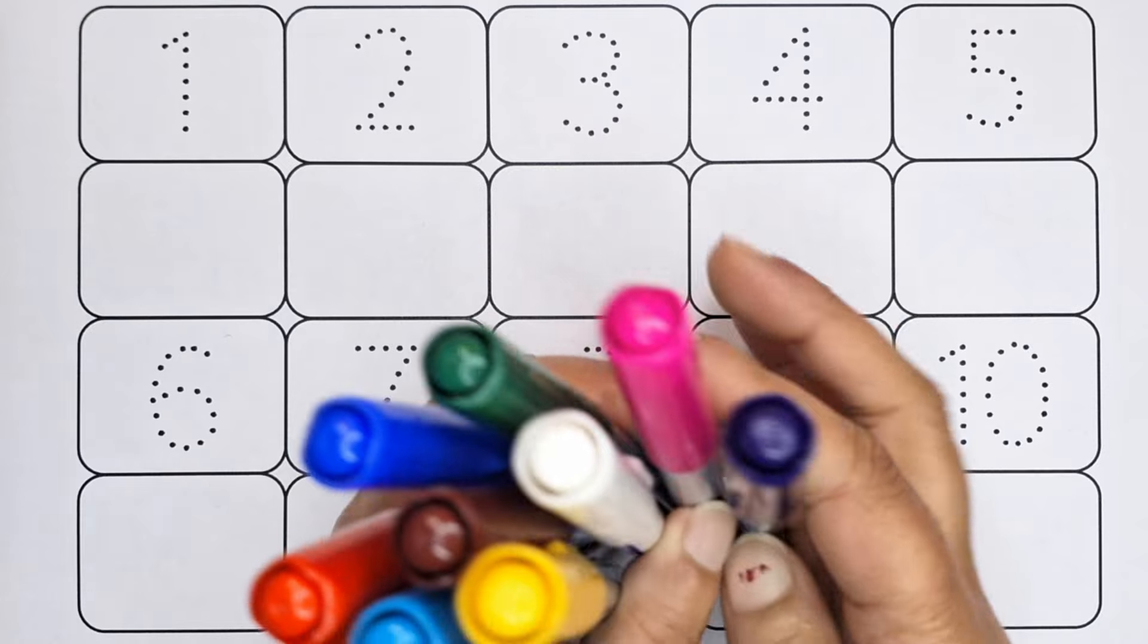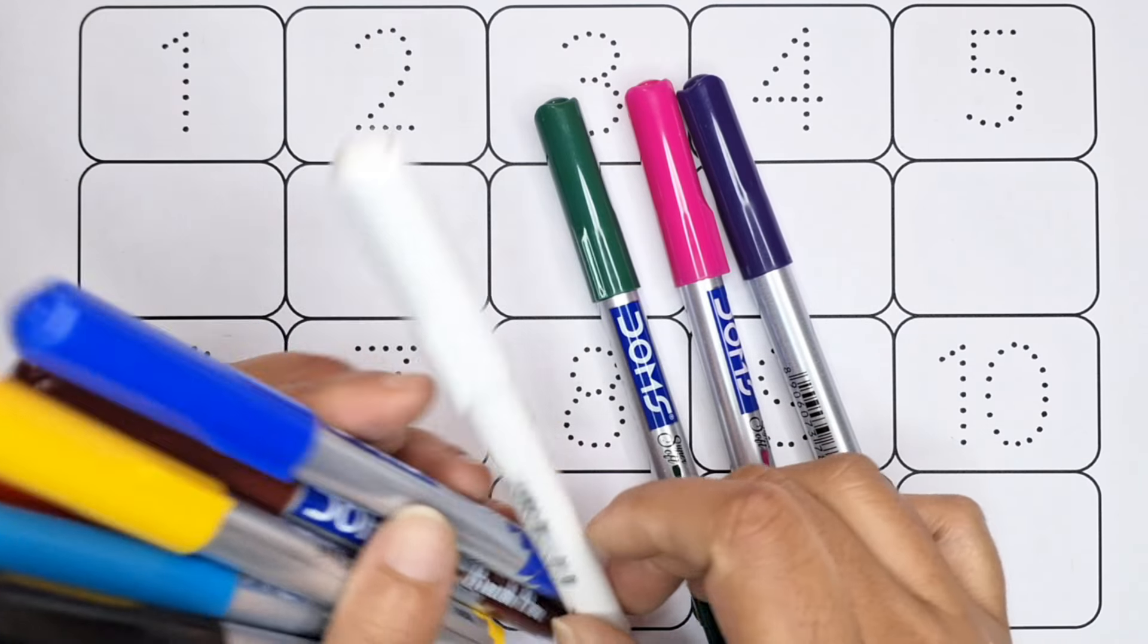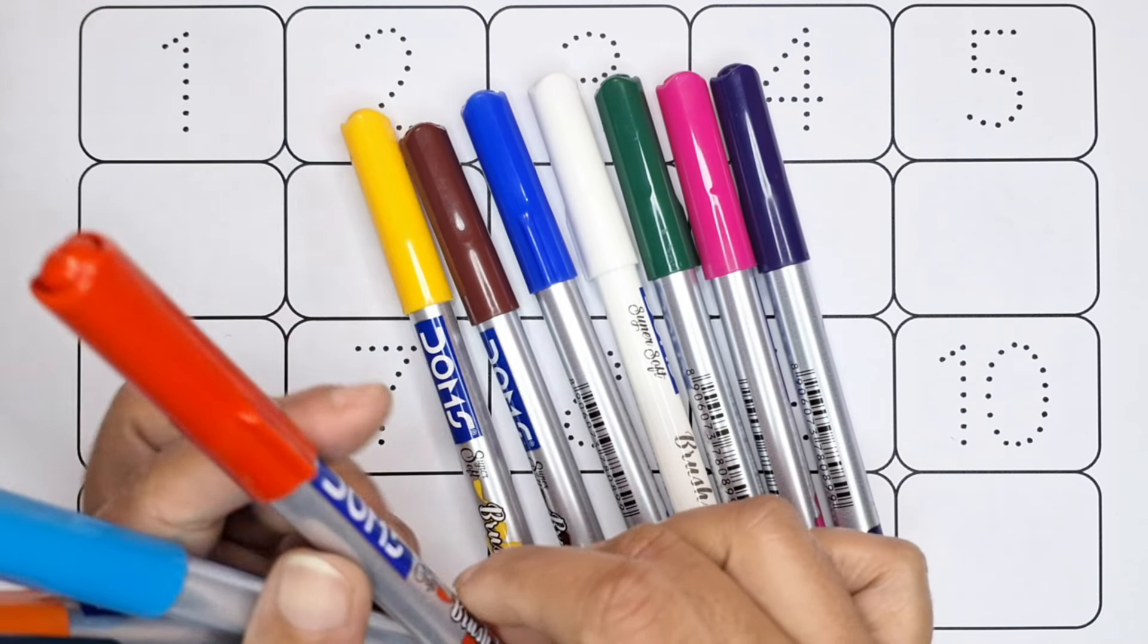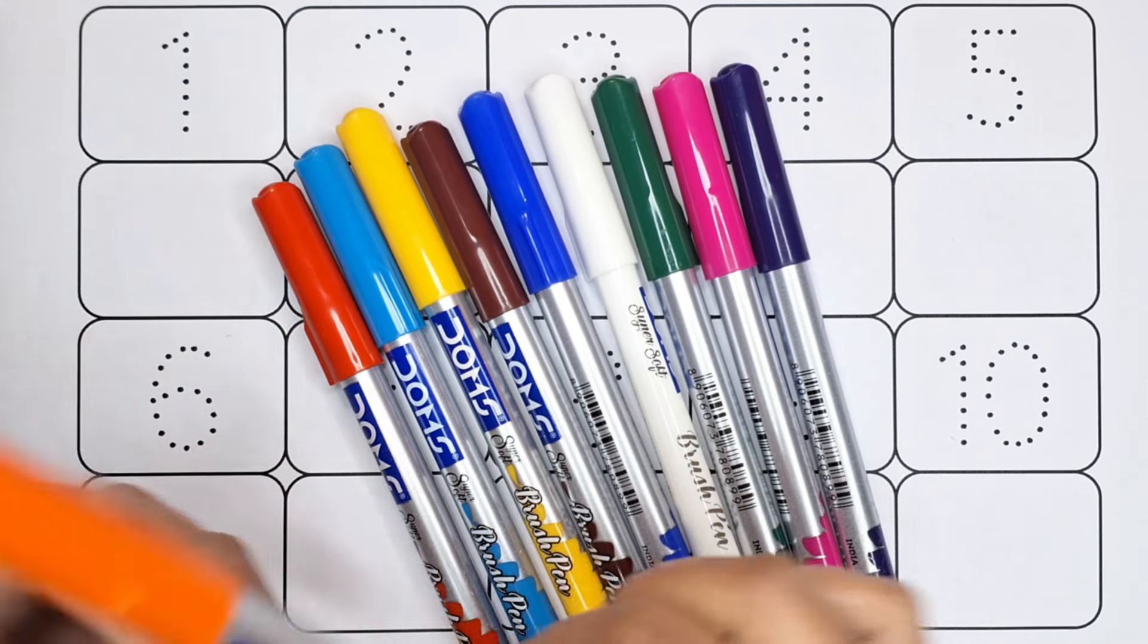Let's learn colors name. Purple color, pink color, dark green color, white color, blue color, brown color, yellow color, red color, sky blue color, orange color, black color, green color.